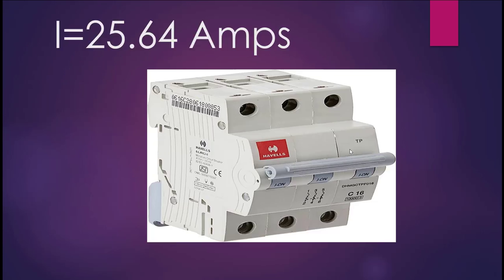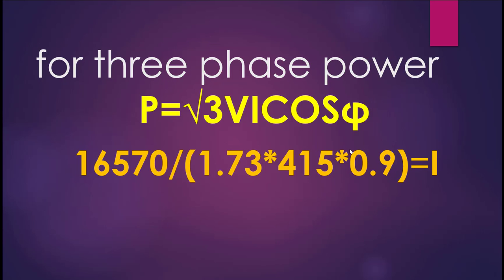That's about 16.5 kilowatts. Now just to remind you, for single-phase power we have P = V × I × cosφ. When three-phase power comes in, it becomes P = √3 × V × I × cosφ. Where the √3 comes from and its significance, we'll explain separately as it would take more time. So quickly: P = √3 × V × I × cosφ. For √3 we use 1.73.